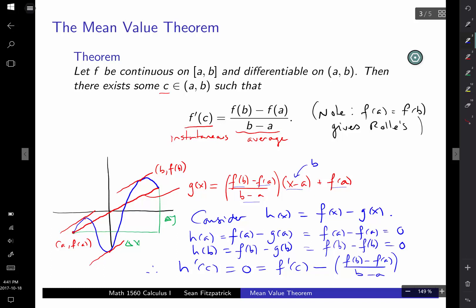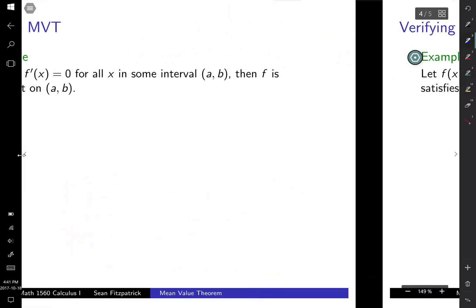And so that difference is equal to zero. Moving f'(c) over, we get the result that we want. So that's how you can see that the mean value theorem is true, if you care to see why it's true.